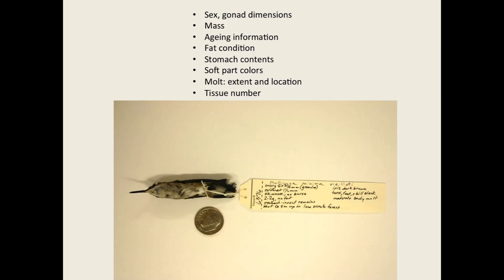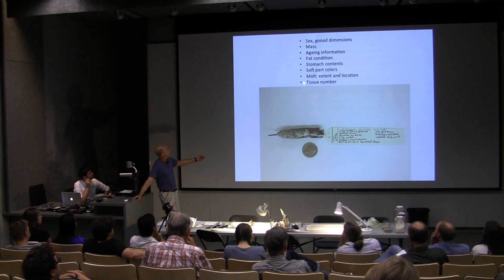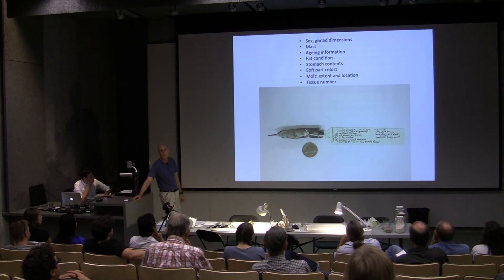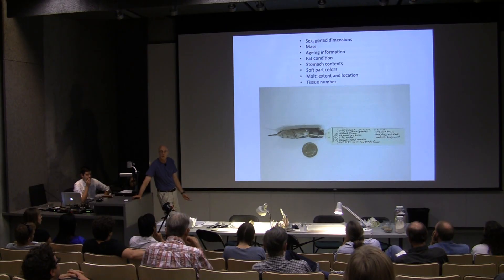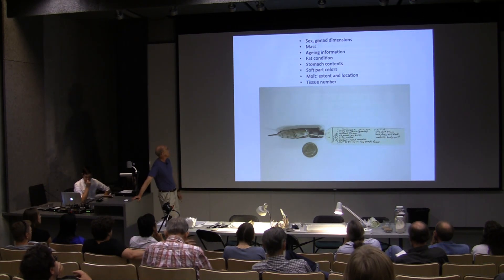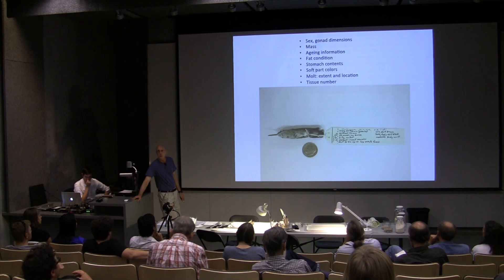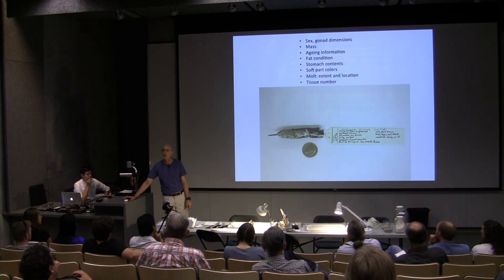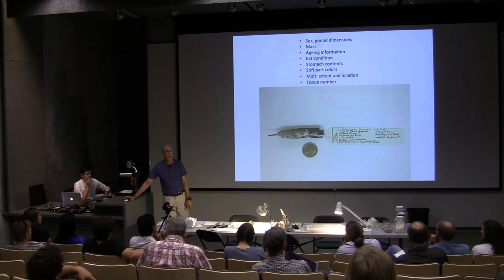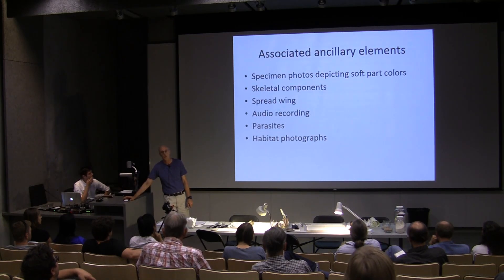On the back side of this hummingbird's tag, you have a whole sweep of data. I want to point out the mass in particular: 2.2 grams. This is one of the smallest birds in the world, vying with its close relative the Cuban hummingbird. For the last 30 years, we've been routinely taking tissue samples — typically liver, heart, and muscle. In field conditions we often use liquid nitrogen; otherwise we preserve tissues in ethanol. Ultimately, everything gets transferred to ultra-cold freezers or a cryo-facility.